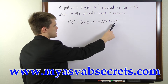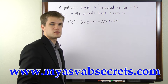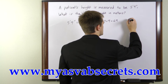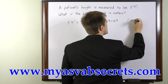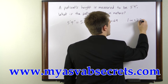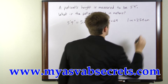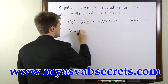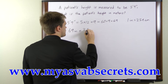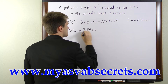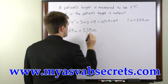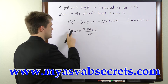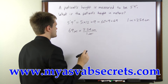Now we then need to convert the inches into centimeters. To do that we need our unit conversion: 1 inch is equal to 2.54 centimeters. So we'll multiply our 69 inches times 2.54 centimeters per 1 inch. The inches will cancel and we multiply 69 times 2.54 centimeters.